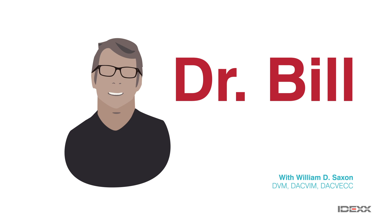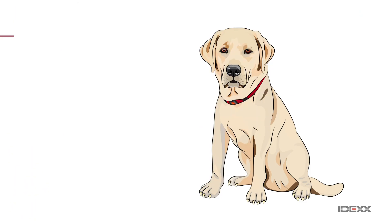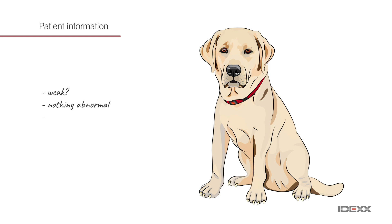Let's talk about a common thing we see in adult dogs — a splenic mass that ruptures. Let's say we have a patient who comes in, an old Lab, he's kind of weak, and we don't really find anything markedly abnormal on his physical. We don't find a fluid wave in the abdomen; we're not sure — vague signs of illness, something's not right.